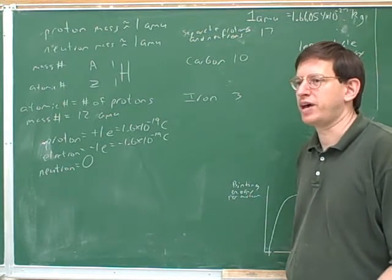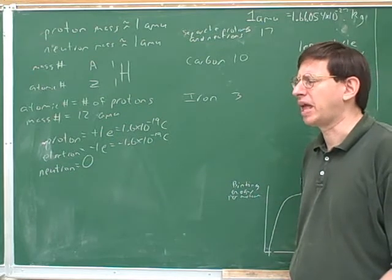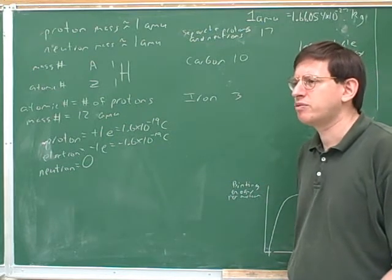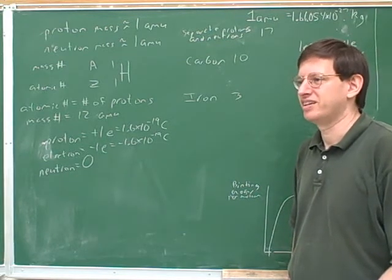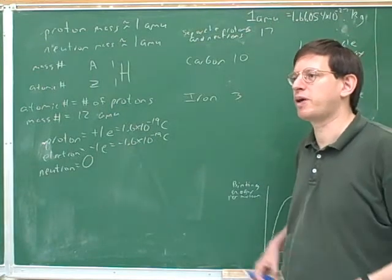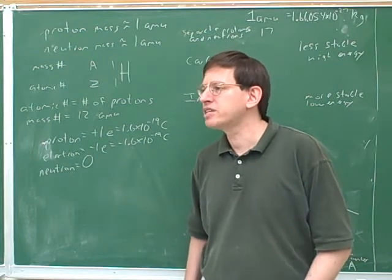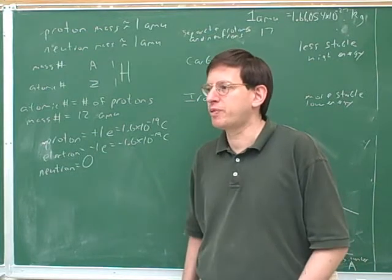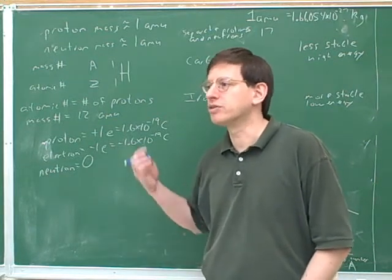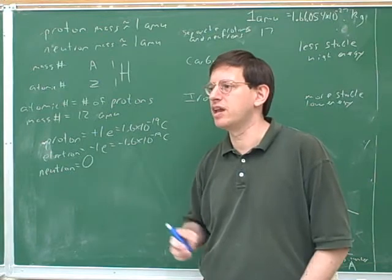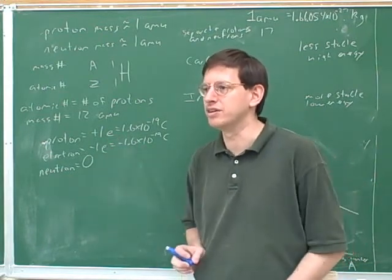Do like charges attract or repel? They repel. So that should make us a little puzzled — how can we pack all the protons into the nucleus? Doesn't it seem like they should repel each other? The nucleus is so small, so how are we getting all those positive protons in there? There must be some other force that operates in the nucleus to hold all the protons and neutrons together. That's called the strong nuclear force — another force we don't usually talk about that holds the nucleons together in the nucleus.